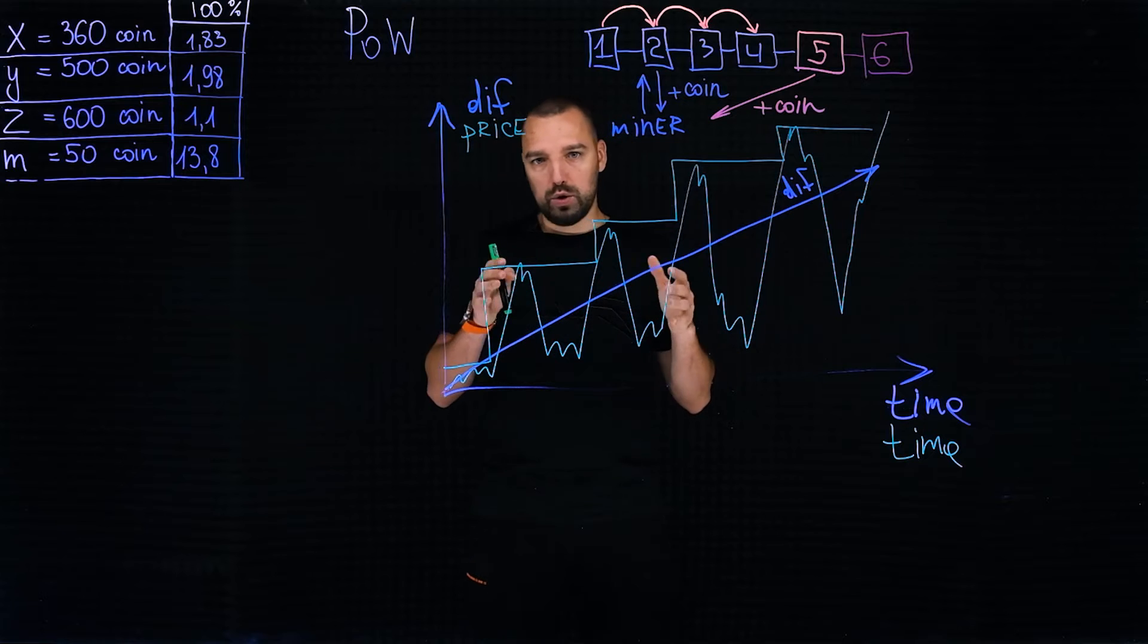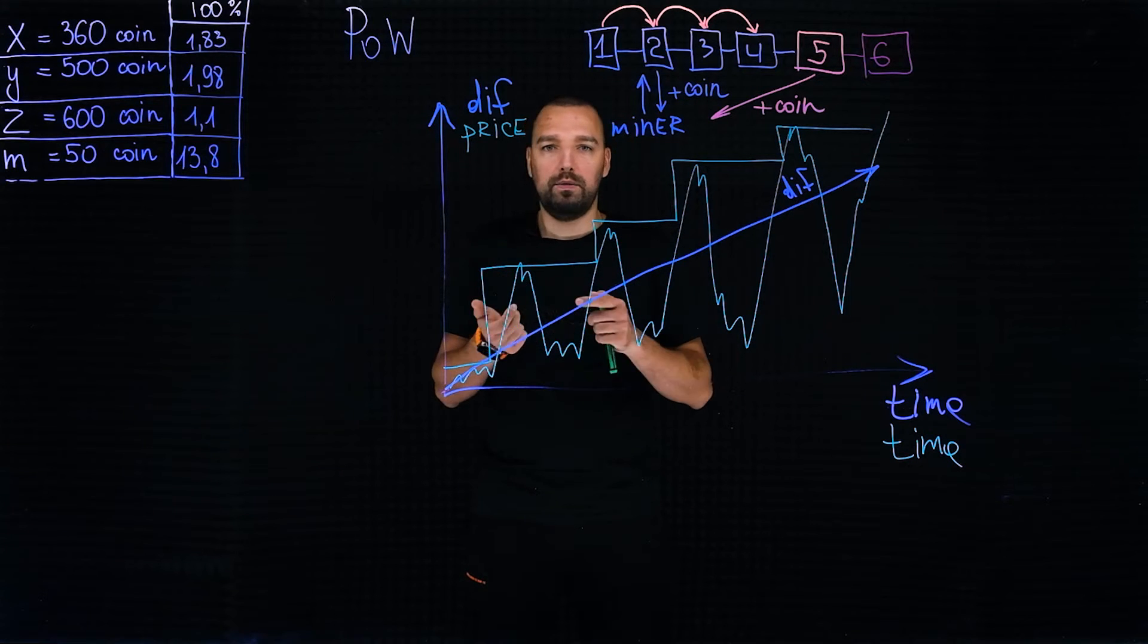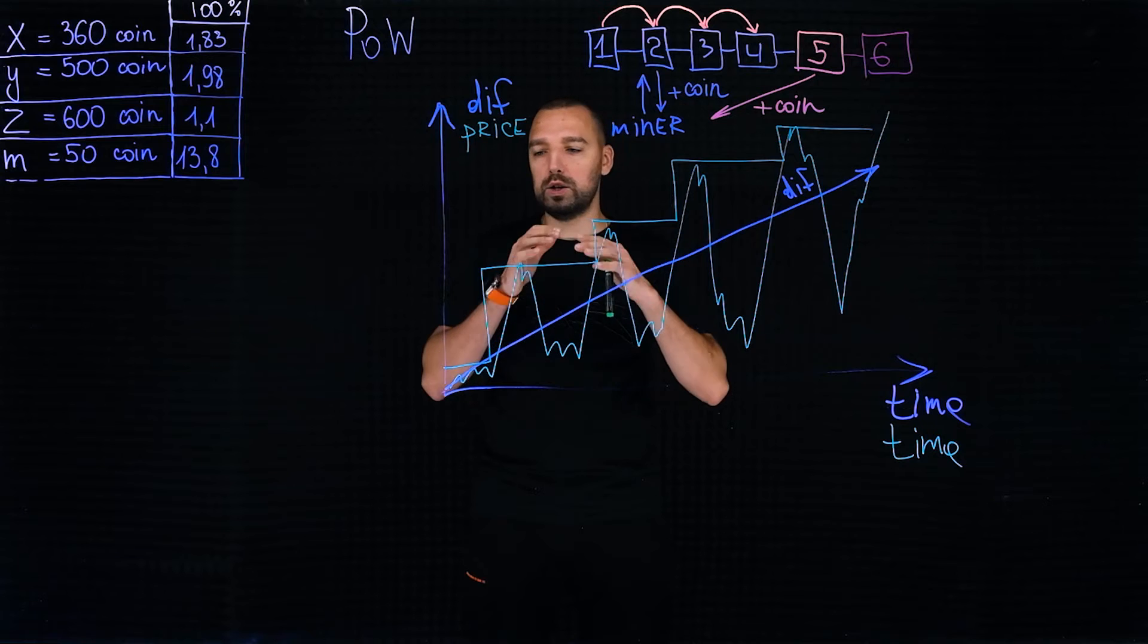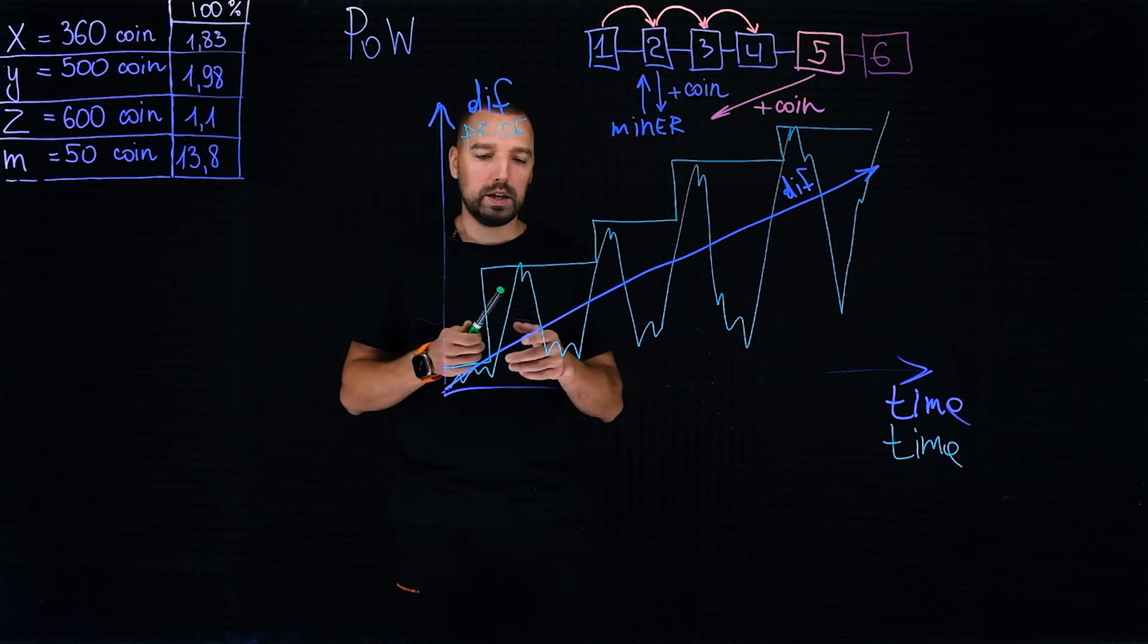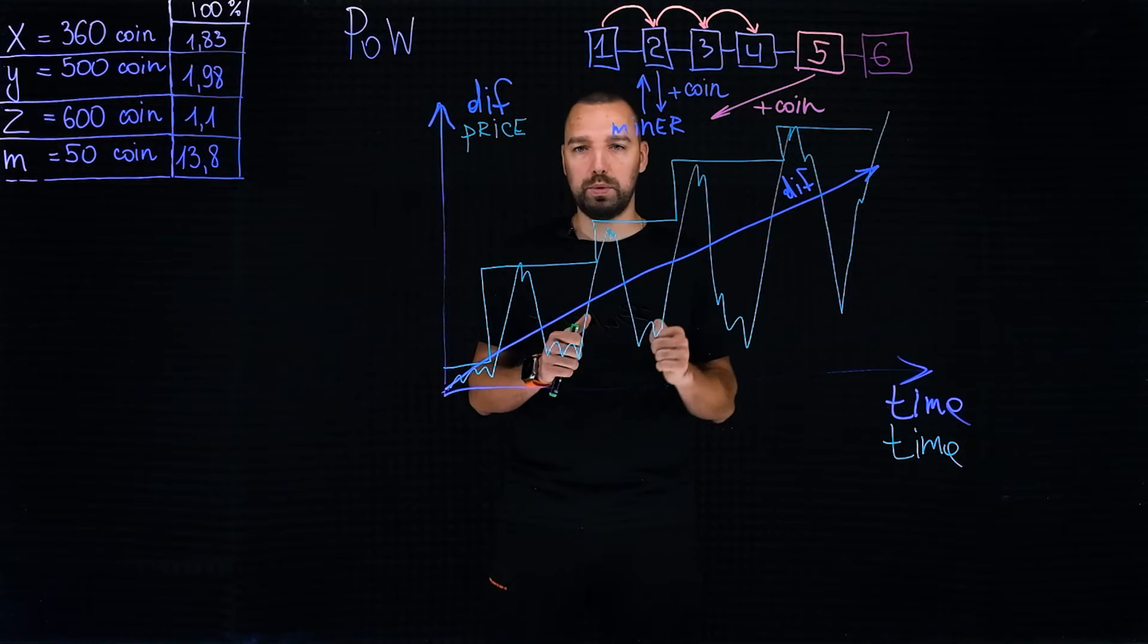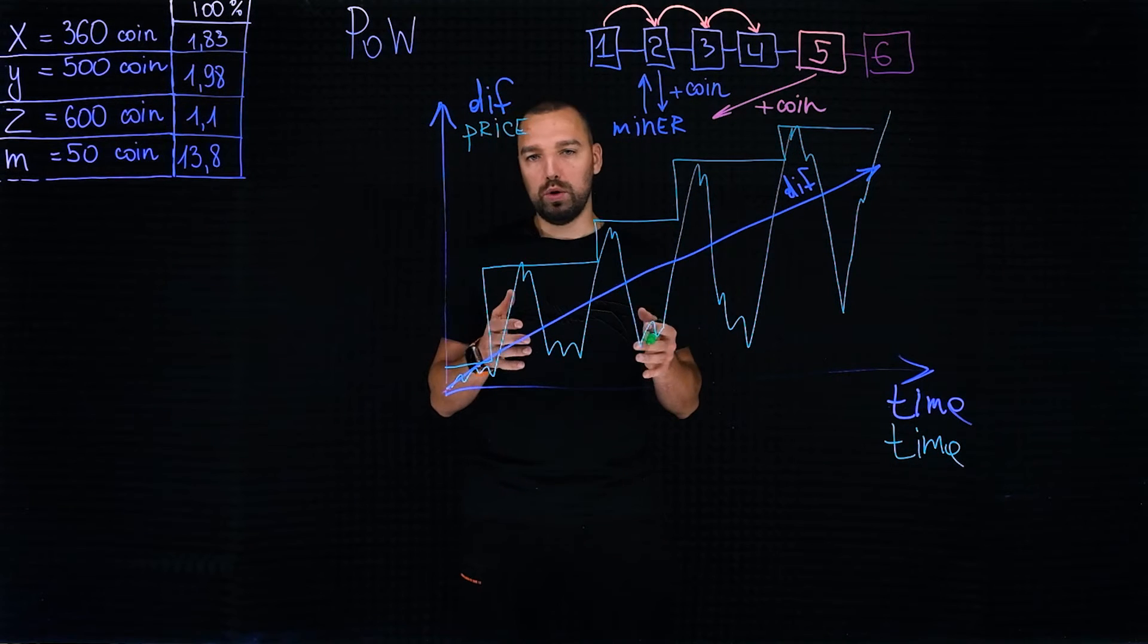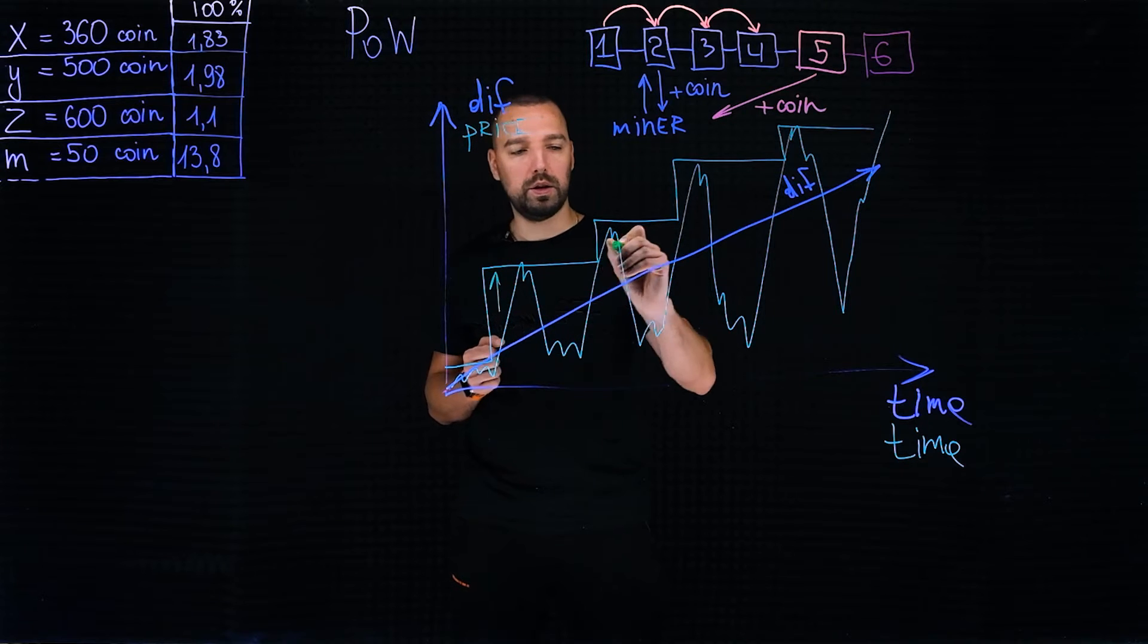This is a very clear theory which is easy to test on Bitcoin, Ether, Flux, Kaspa, and hundreds and even thousands of coins that develop according to the proof of work system. Accordingly, each subsequent takeoff is higher than the previous one. This suggests that the project which is developing has positive aspects that push the market up.